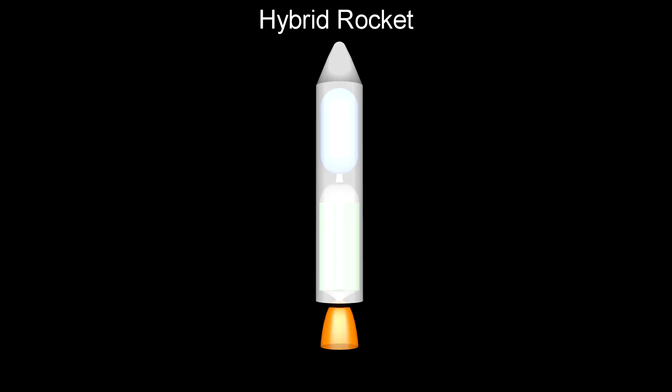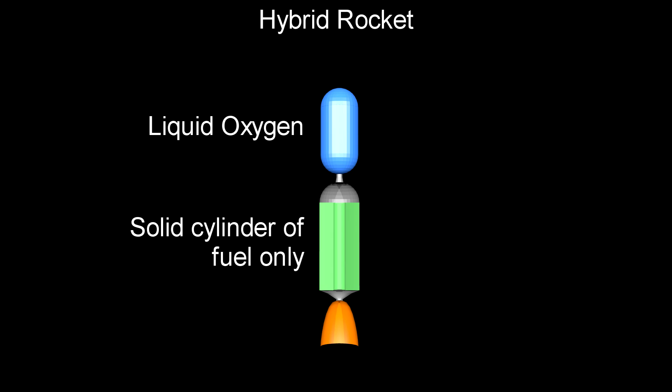Another type of rocket is a hybrid of the two, where the fuel is a solid cylinder again, but an oxidizer is sprayed through the middle of the cylinder. As long as the spray continues, the rocket keeps firing. When the spray is stopped, the rocket stops firing.